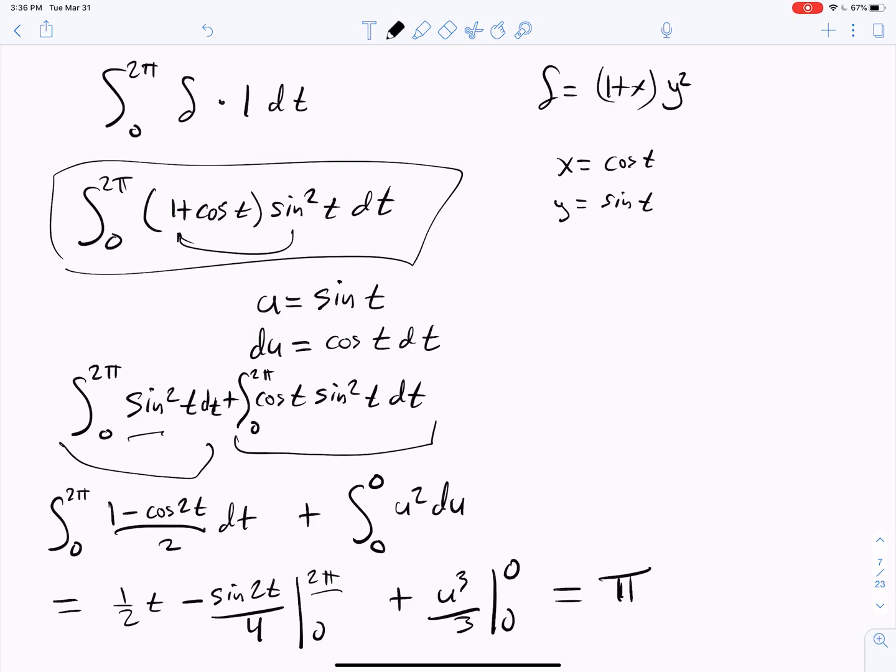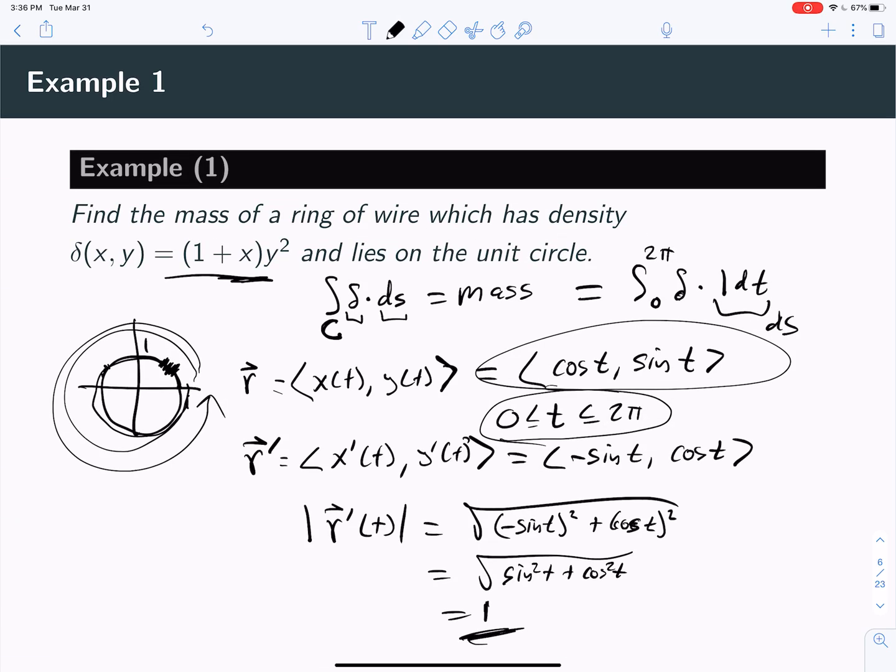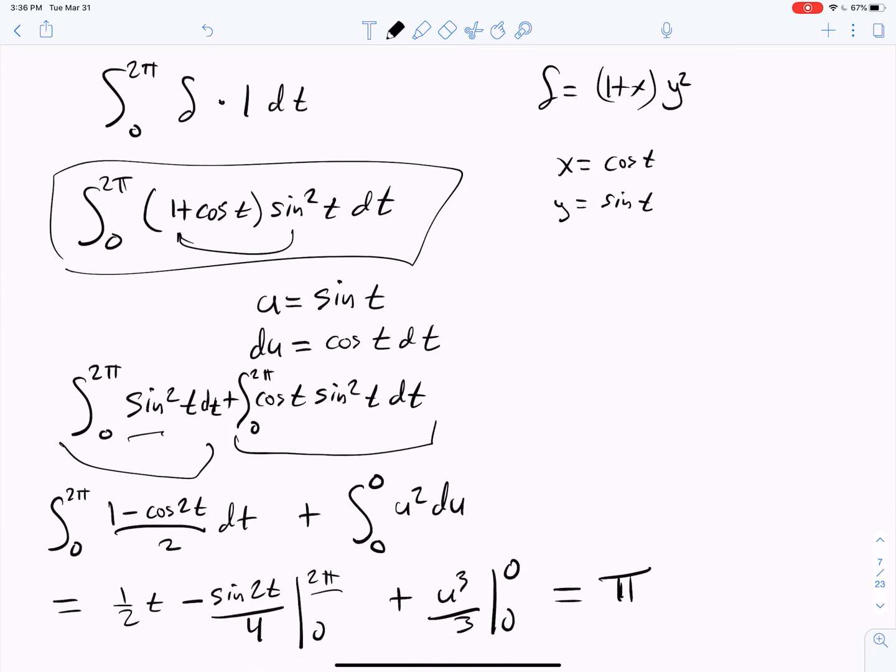So the mass of this is actually equal to π, even though the circumference was equal to 2π, because the density was less than 1 a lot of the time. If you think about what x is and y², those numbers are - x's and y's are less than 1 usually, and so those numbers squared are going to be even smaller.